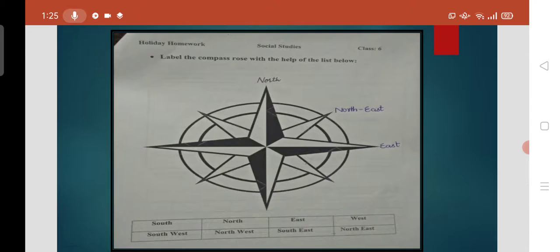Now move on to page number 8. Here you can see there's a compass rose. You have to label this compass rose with the help of the list given below. Students, compass rose directions: north, east, south, west.